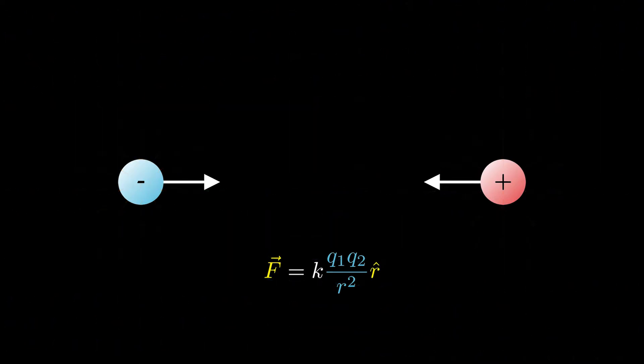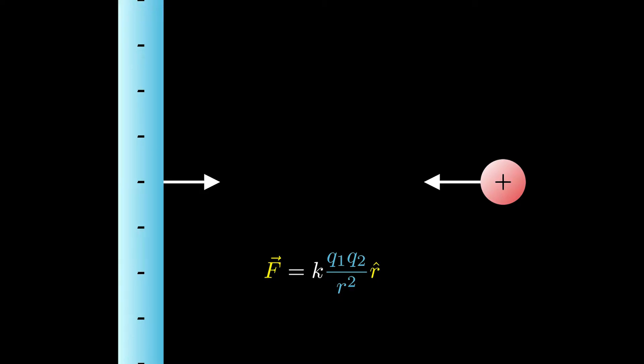As an extension of that, finding the force between a point charge and an infinite line of uniformly distributed charge is also usually taught. To get this force, we can simply integrate Coulomb's law by breaking the line into point charges, or use Gauss's law, which is of course an equivalent process.